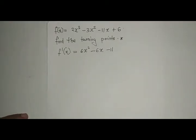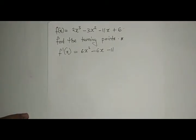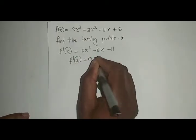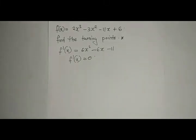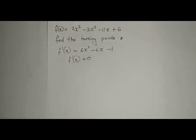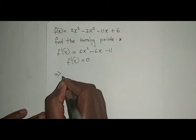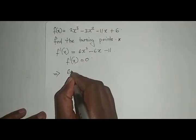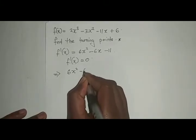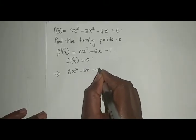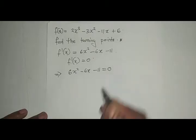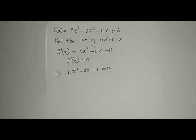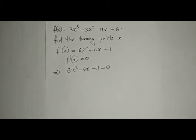How do we find the coordinates at the turning point? We need to know that at the turning points, f'(x) equals zero because the gradient at a turning point is zero. Therefore, we are saying 6x² - 6x - 11 equals zero. Therefore, all we now need to do is solve for x here, which means we can use the quadratic formula.